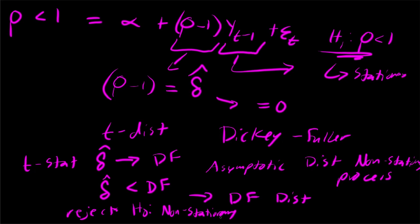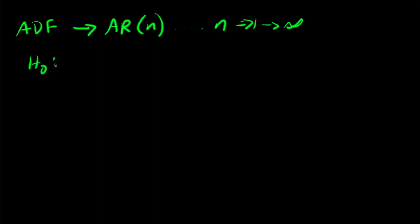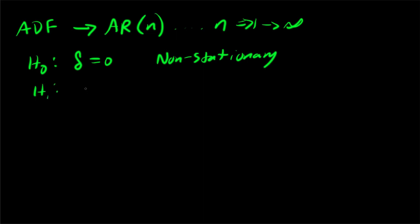The simple Dickey-Fuller test looks for an AR(1) process, but time series is much more complicated than AR(1), so we want to test further lags. This is where the Augmented Dickey-Fuller (ADF) test comes in — it's used for AR processes of order n, where n goes from one to infinity. The null hypothesis remains that delta = 0 (non-stationary) and the alternative is delta < 0 (stationary).